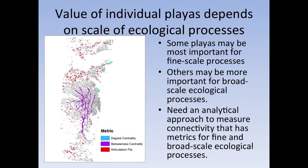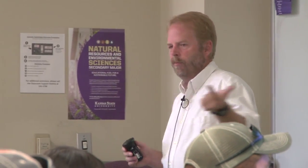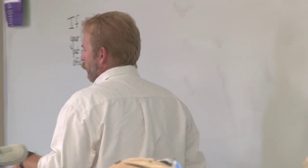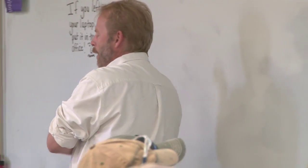We need to figure out which individual playas are important across the entire system, and that depends on the scale of ecological processes. Some playas are important for fine-scale or local processes — the playa and its surrounding playas, what I will call a sub-network. Some playas are important for broad-scale processes that go across the entire landscape — things like immigration, emigration, movement of propagules and genes. We need an analytical approach to measure connectivity with metrics for both broad-scale and fine-scale ecological processes.